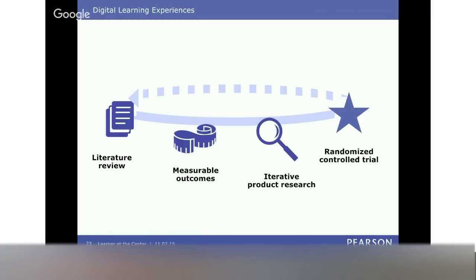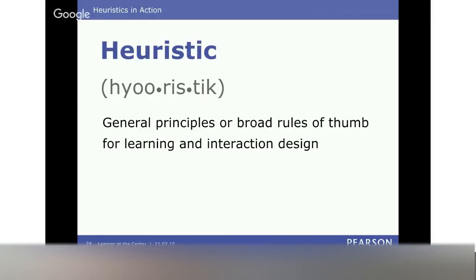But what needs to be in place long before we're doing randomized control trials? There's a literature review looking at learning sciences research, identifying measurable outcomes and making a plan to collect evidence of those, and then there's this whole body of iterative product research. This crosses usability, instructional design, participatory design, and all of those things that take place before the randomized control trial. From that body of iterative product research, we're seeing heuristics start to emerge — broad rules of thumb around learning and interaction design.